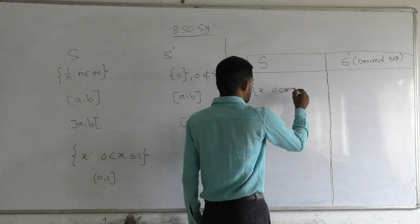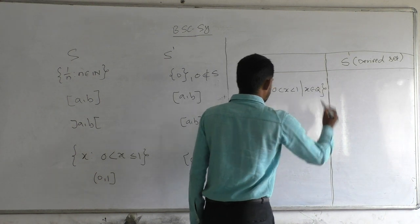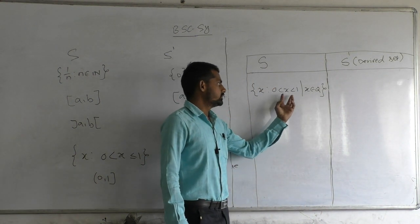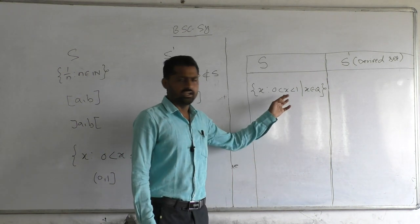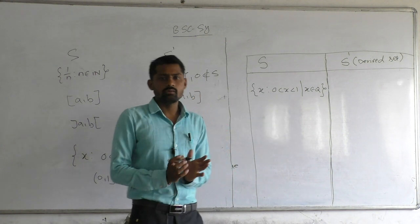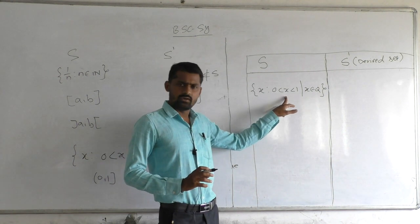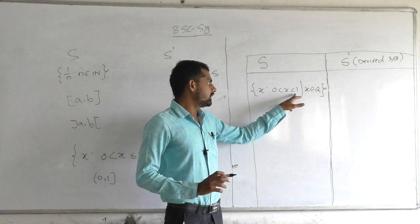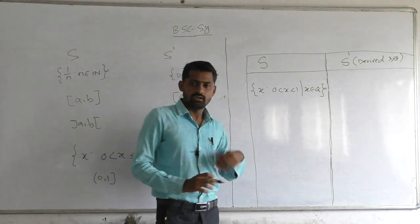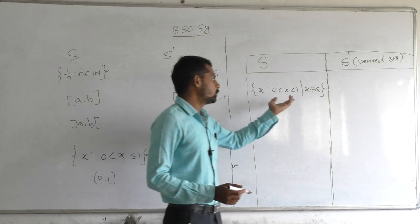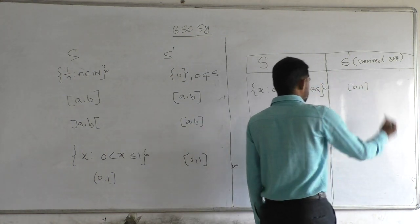Consider the set {x : 0 < x < 1, x ∈ ℚ} — all rational numbers between 0 and 1. If we choose any rational number between 0 and 1, the neighborhood of that number must contain infinitely many rational points of this interval. Therefore the derived set of this set is the closed interval [0, 1].